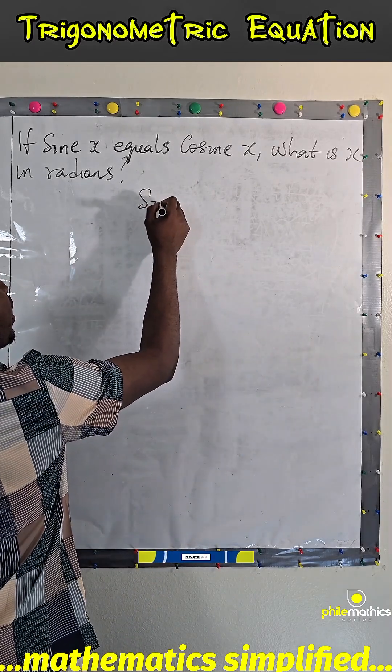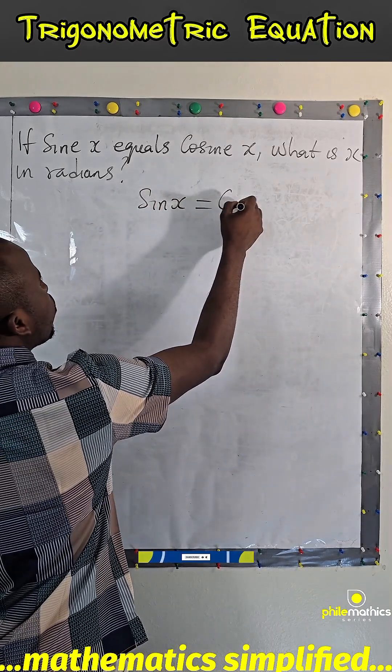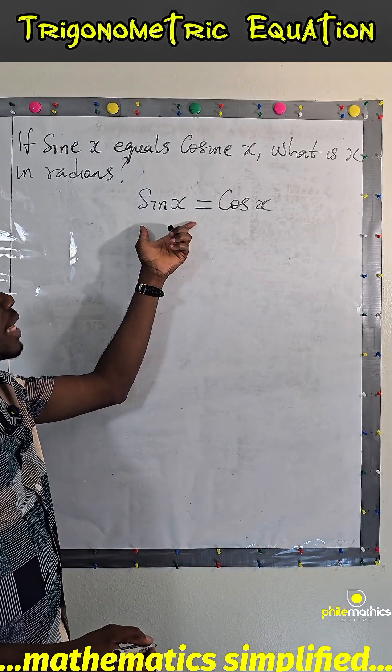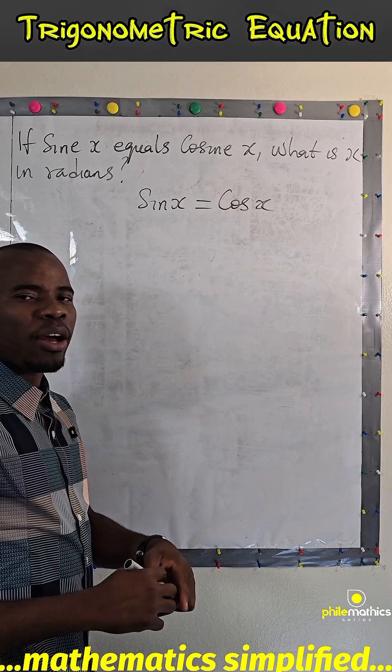That is sine x equals cos x. Recall that sine and cosine, they are complementary angles.